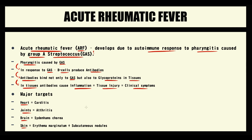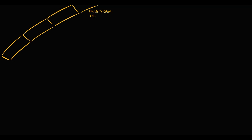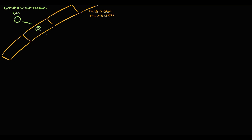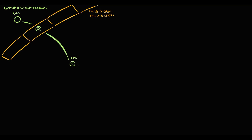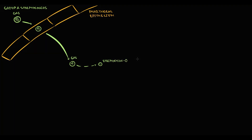Let's explain the pathogenesis. Streptococcus can penetrate into the pharyngeal epithelium where it causes inflammation — a condition we call pharyngitis. From the pharyngeal epithelium, Streptococcus can leak into the blood, which is quite dangerous because in the blood Streptococcus produces streptolysin O, which is essentially a toxin — an aggressive substance that can cause damage to tissues.